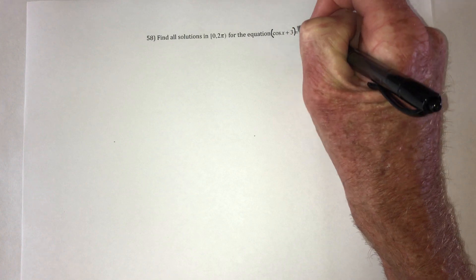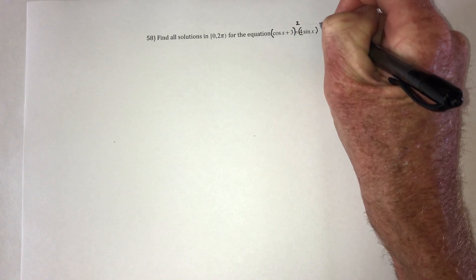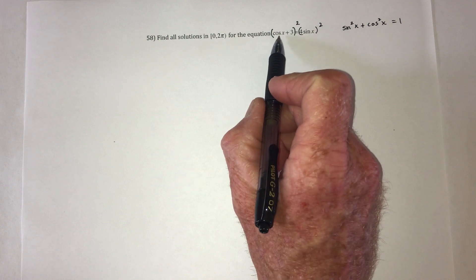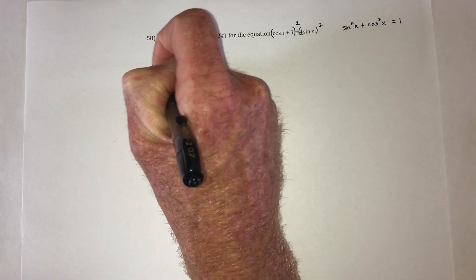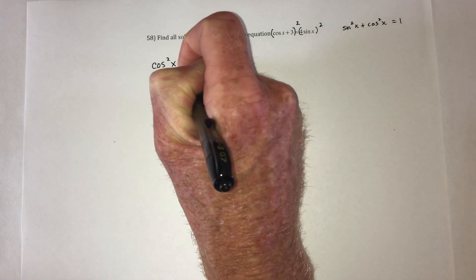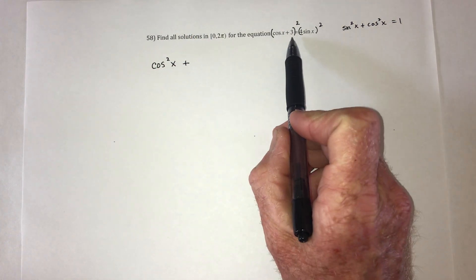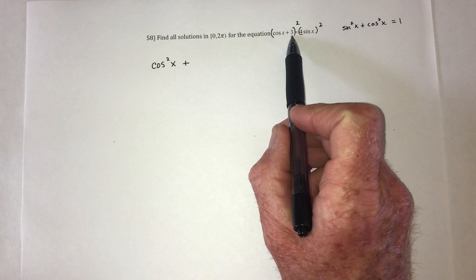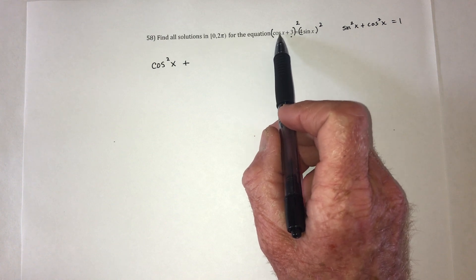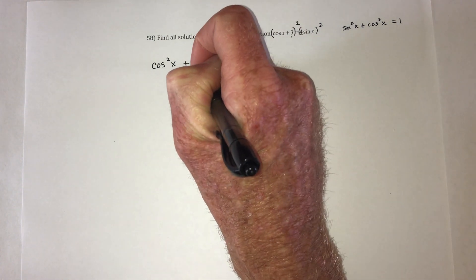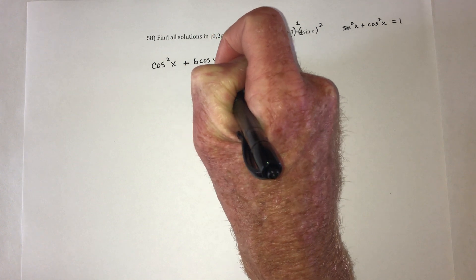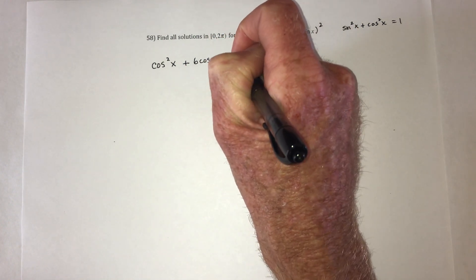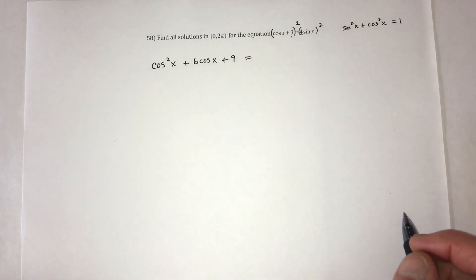But in order to get the squares, what I need to do is first square both sides. So on the left side, you would need to square the cosine. For the middle term, you multiply these two and then double the result. So it would be 3 cosine x and then double that, so that's 6 cosine x. And then square the 3, so that's a 9.